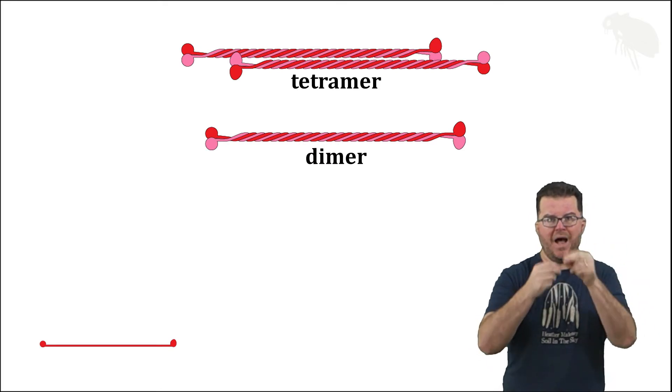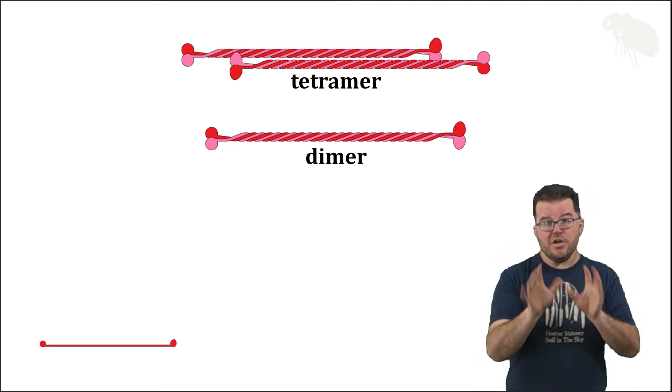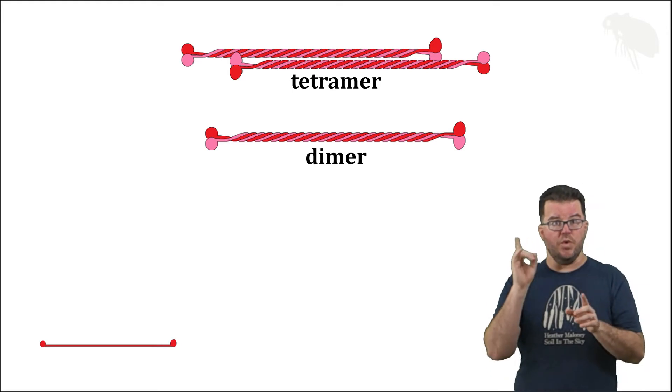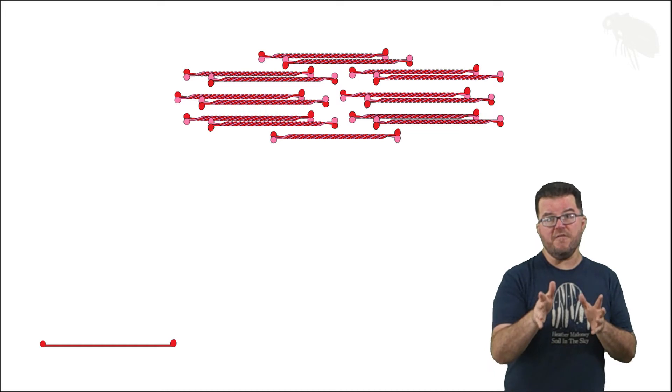And we also have the dimeric pair as well. Intermediate filaments though aren't composed of just one of each, so I want to shrink those guys down and then multiply. Actual intermediate filaments are built from sets of seven tetramers and one dimer.